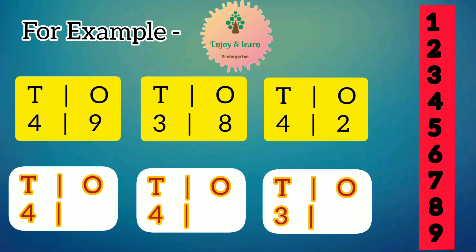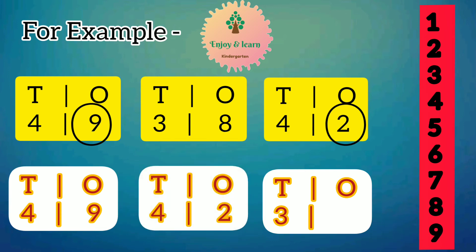Now let us look at the ones place of number 42 and 49. So from 2 and 9, 9 is the greatest. So at first we will place number 9 and at second we will place number 2. That means greater number 49 will be at first, and at second number 42 will be there.